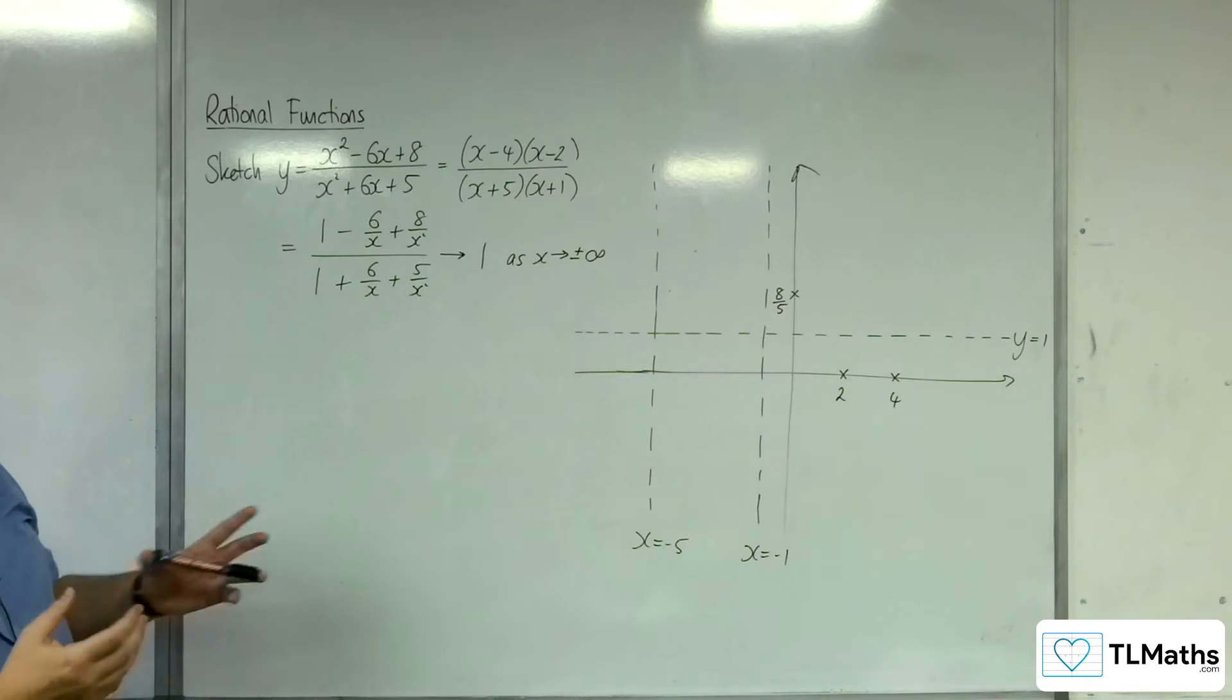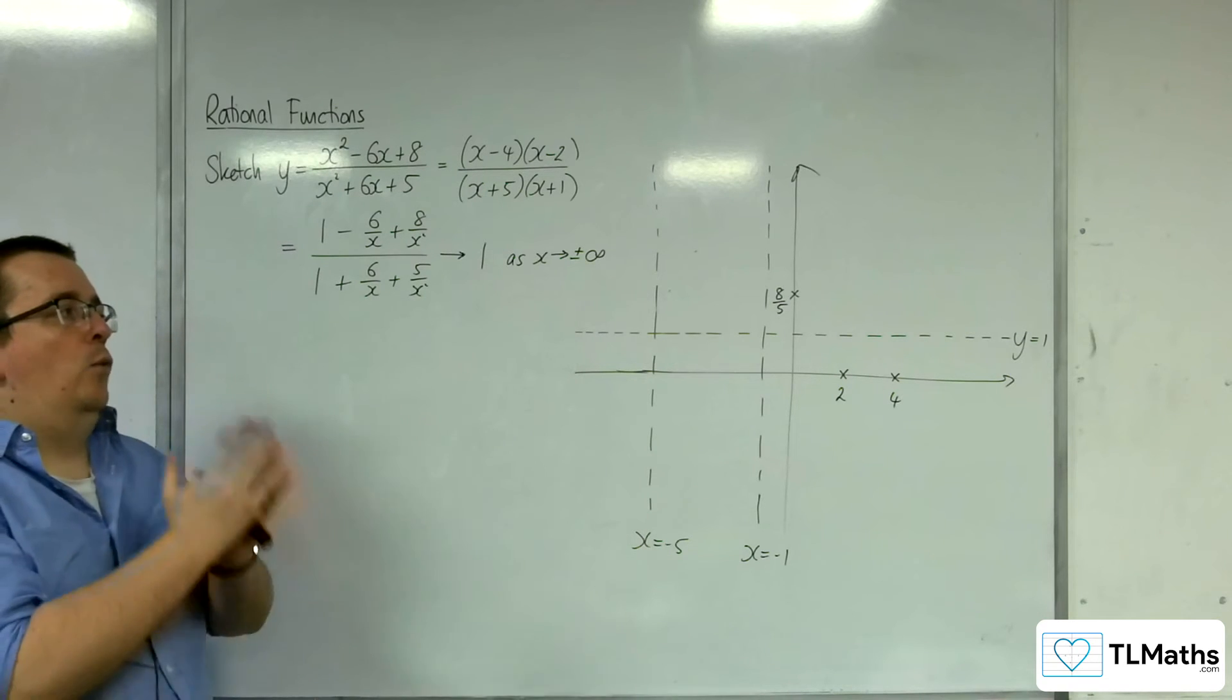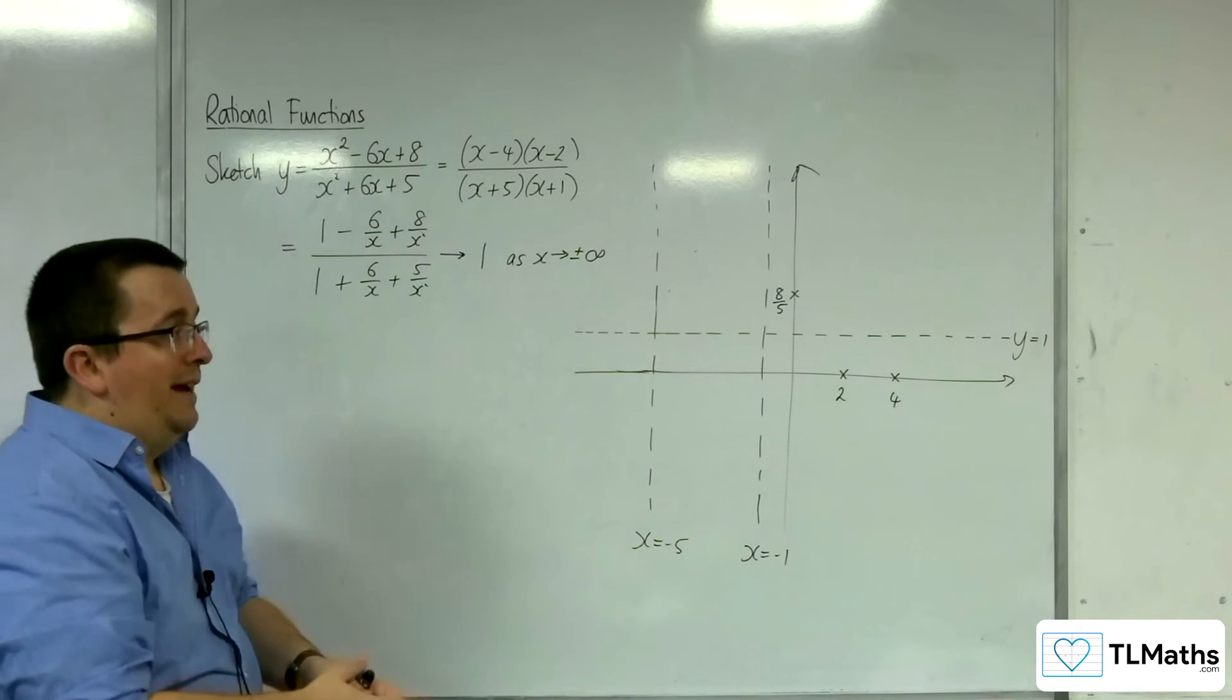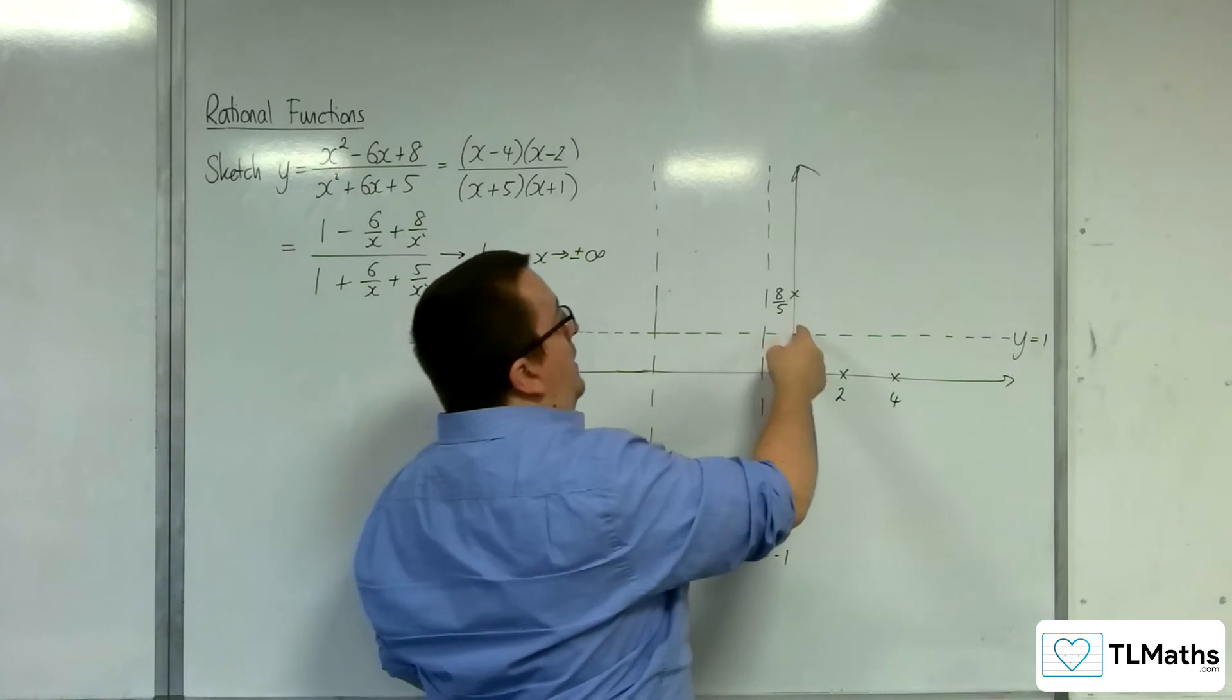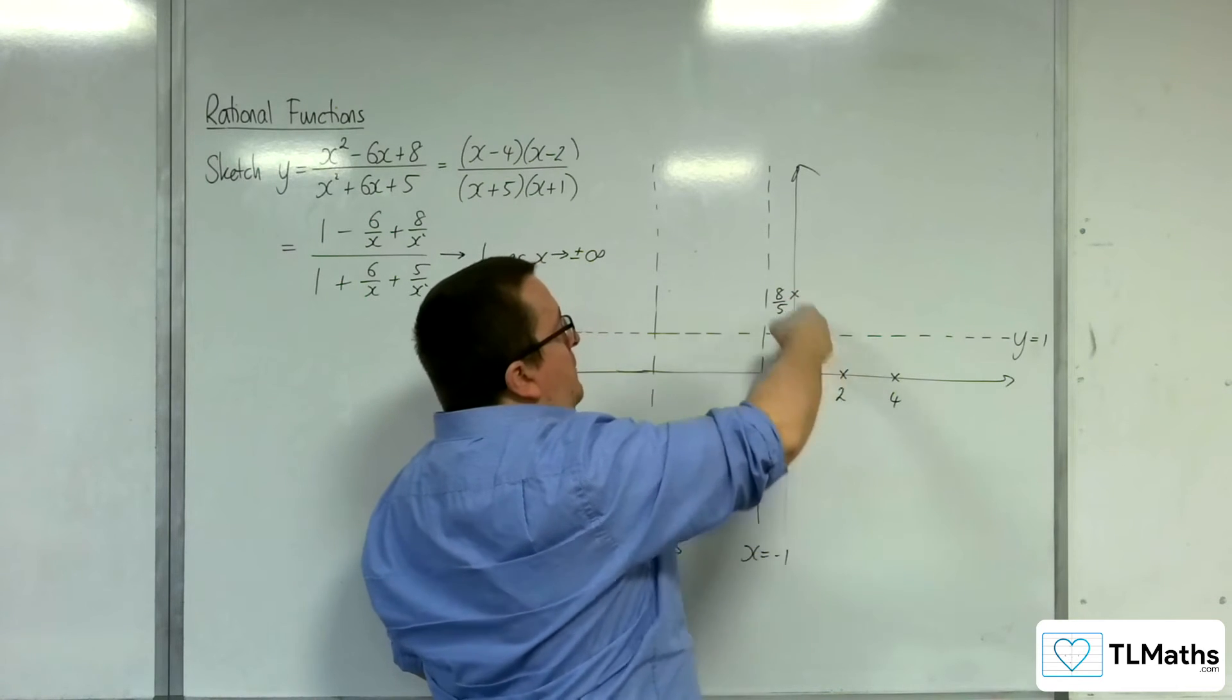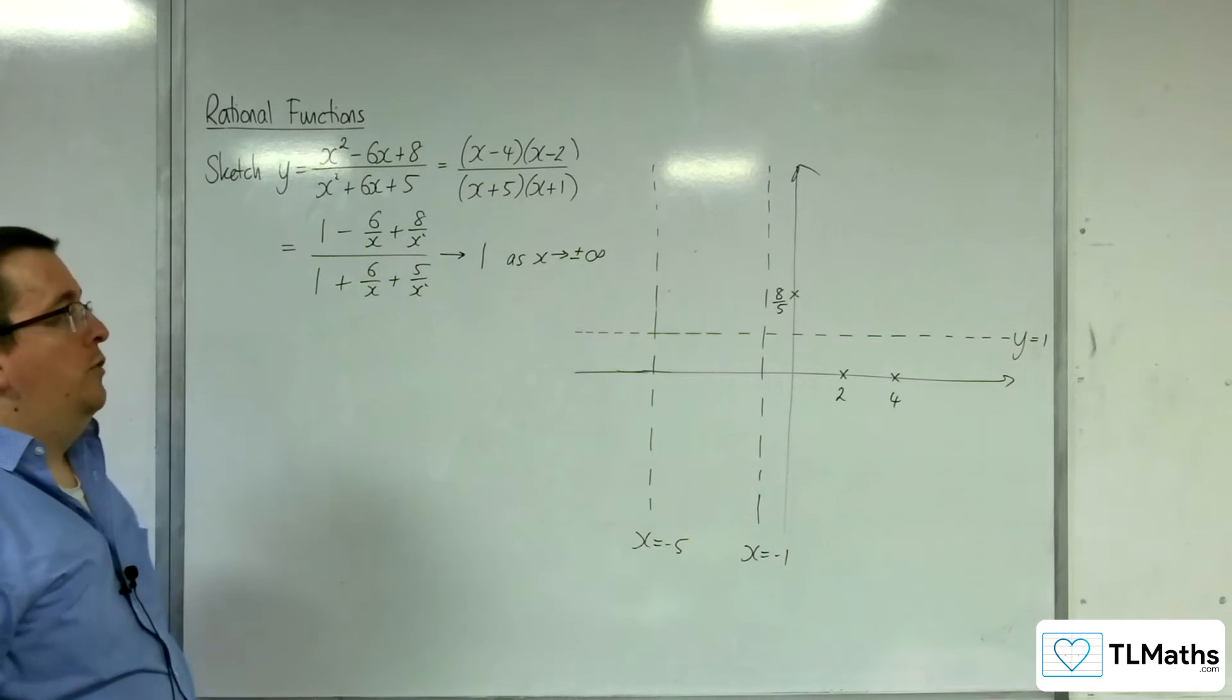So the next thing that I would probably do at this stage is then work out whether the curve is going to cross the horizontal asymptote at any point other than between 0 and 2, because it clearly has to go this way. So it's definitely going to be crossing the horizontal asymptote at least once. Will it cross it again?